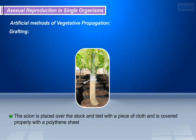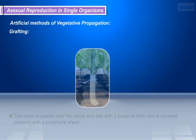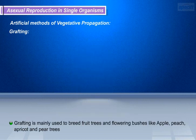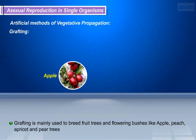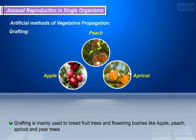The scion is placed over the stock, tied with a piece of cloth, and covered properly with a polythene sheet. Grafting is mainly used to breed fruit trees and flowering bushes like apple, peach, apricot, and pear trees.